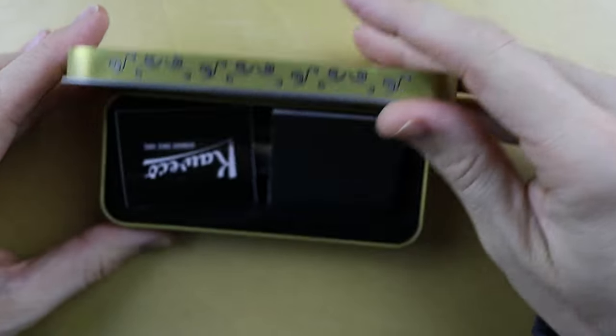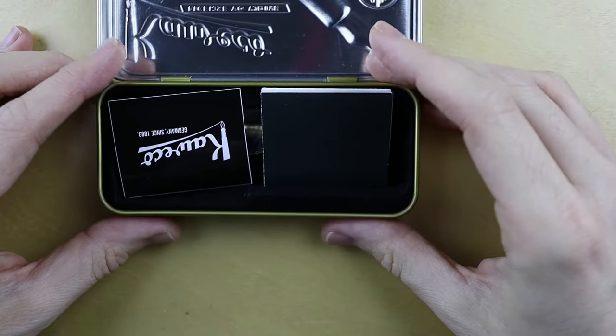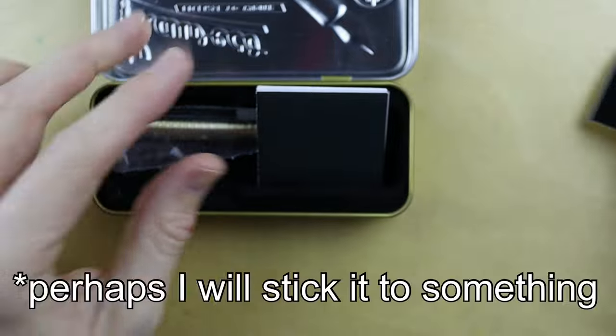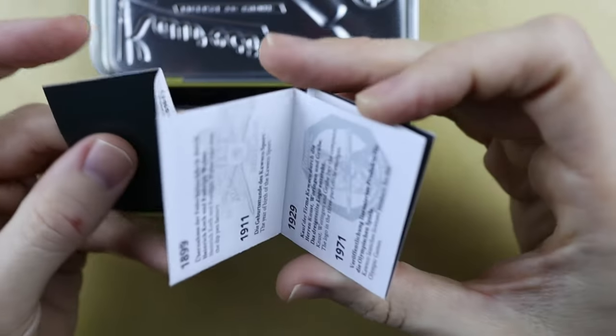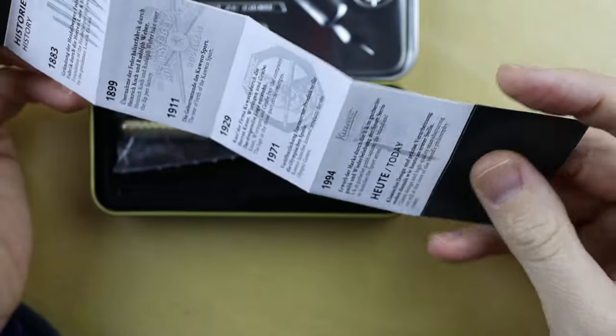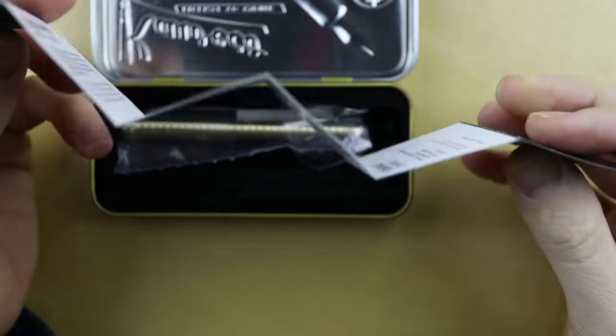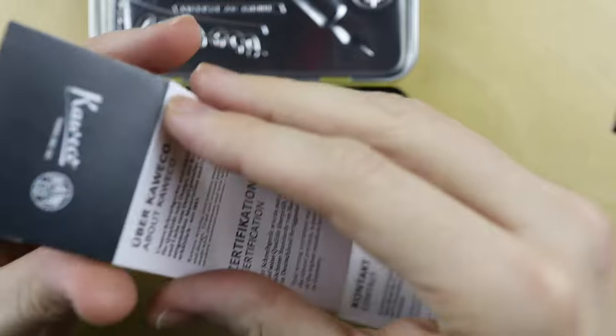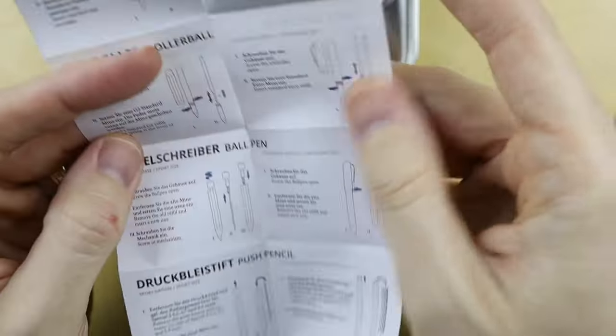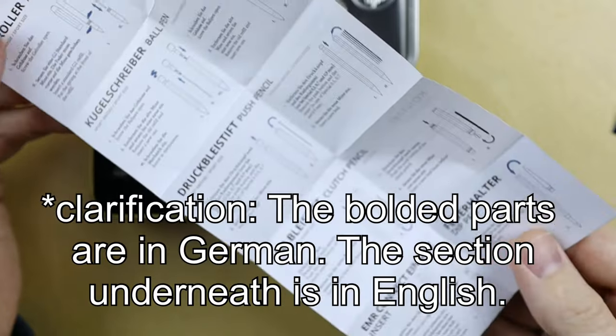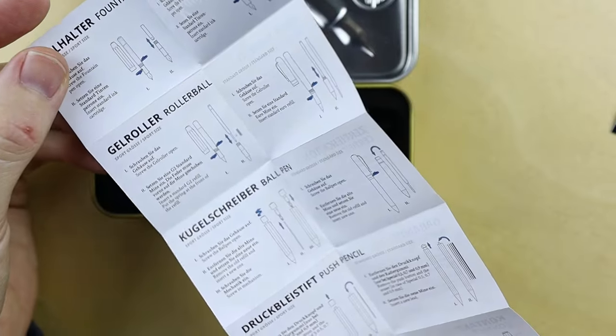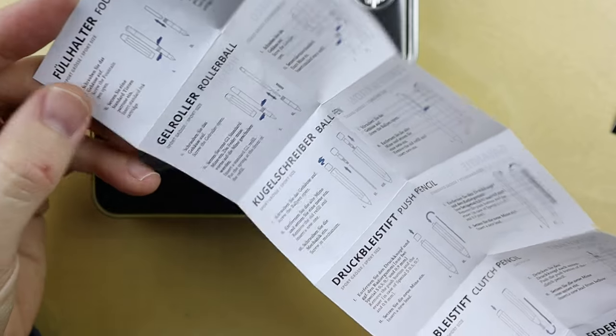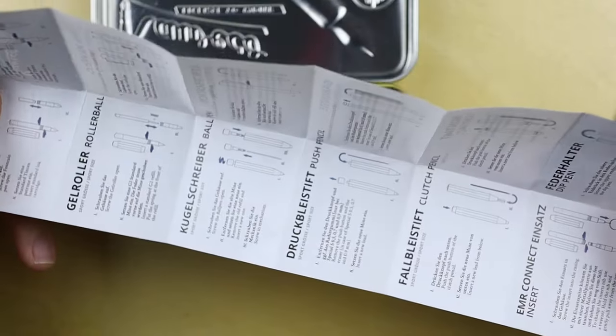And inside, there are more treasures. Okay, there's a sticker. That's cool. I can do something with that. And there's a pen underneath here. The history of the Kaweco company. It does appear to be in German. And then they have a bunch of little diagrams. I kind of like these diagrams of all the different pens that they make and how you use them.